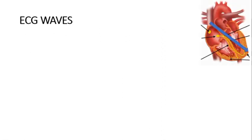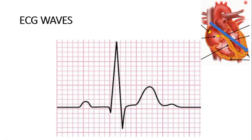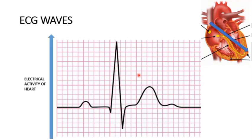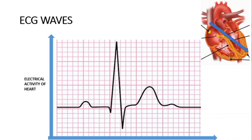Now let's talk about the ECG waves. This is the heart and this is the direction of passage of current. If the direction of current passage in your heart is normal, your ECG wave will look like the standard waveform — if a person is dead the wave would be flat; if alive, you'll have bumps and peaks. On the y-axis we plot electrical activity of the heart, and on the x-axis is time.